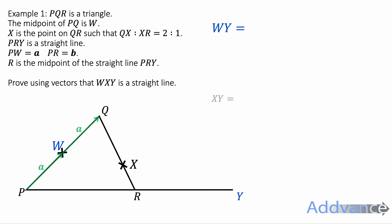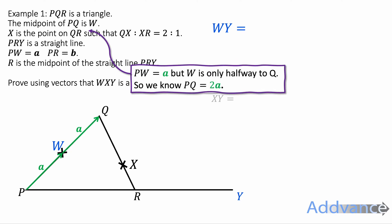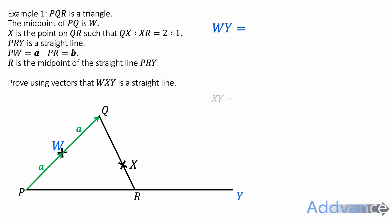Let's start with W to Y and we can start by labelling that P to W is a and therefore W to Q is a as well. We can also label the vector b here and that also means R to Y is also b. To go from W to Y we're going to go along this path here. We're going to go minus a plus 2b along that path like that. And remember the minus a is negative because it's going backwards.